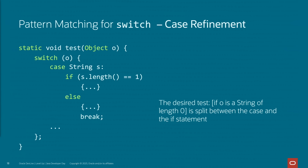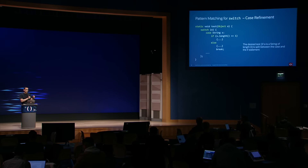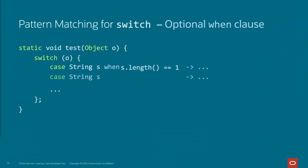After a successful pattern match, it is often the case that we need to do some further tests. In this case, we want to do something with strings, but something special if the string is of length one. We can improve this by mixing a combination of pattern matching and a condition using the when clause. Now the first case will match strings of length one, and every other string will be caught by the second case. The when clause can use any pattern variables declared in the case label.